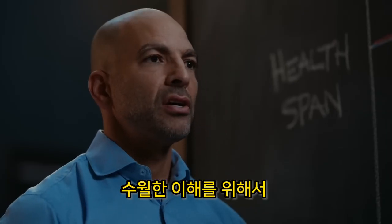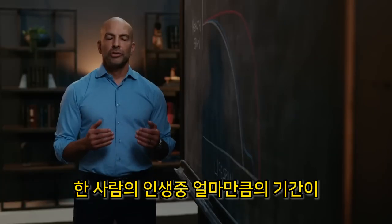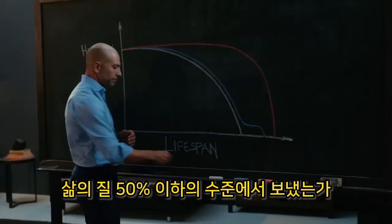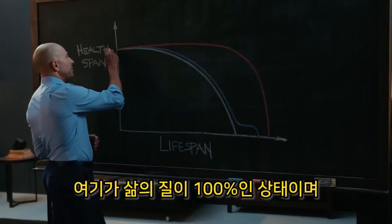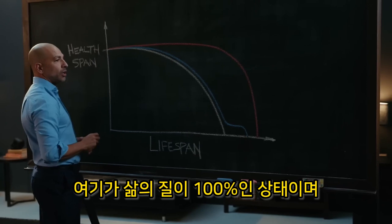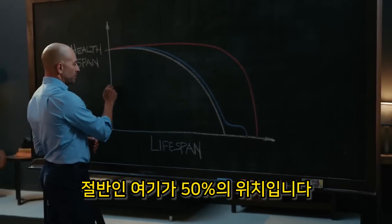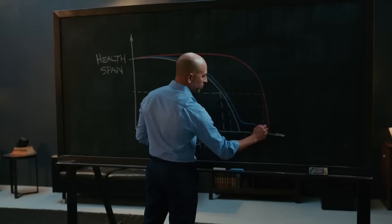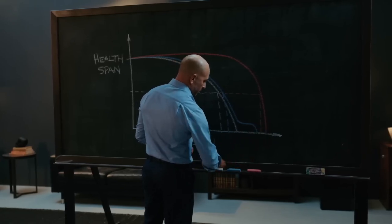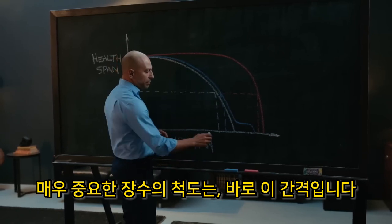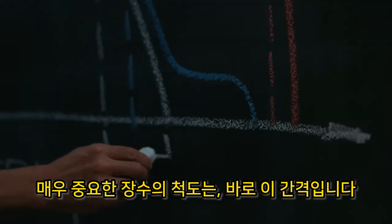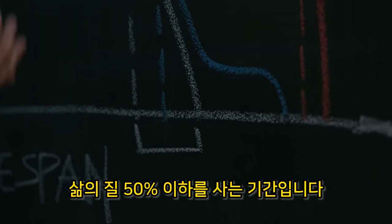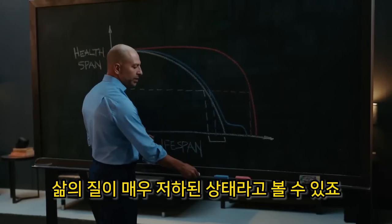One way that I like to think about this is to ask: how much of a person's life is spent below about the 50th percentile of quality of life? If you think about 100 percent being the top of the quality of life scale and 50 percent being the midpoint, a very important metric to me is how big that gap is — the period of time a person spends beneath that 50 percent window in which their quality of life is really reduced.